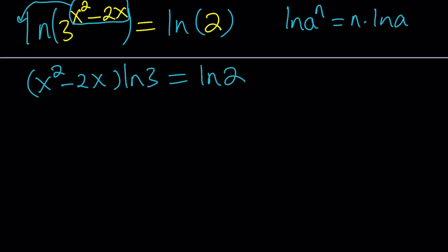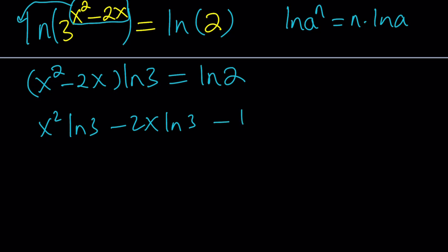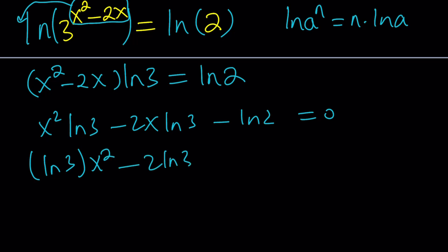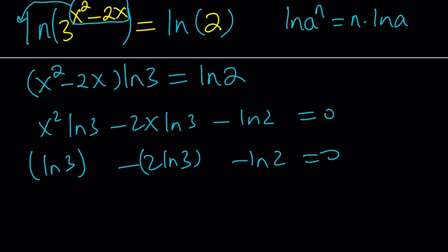Now, from here we want to solve for x. One way to look at it is we can distribute everything. You can put everything on the same side and turn this into a quadratic equation. You can write it like ln 3 multiplied by x squared minus 2 ln 3 multiplied by x minus ln 2 equals 0. If you pay attention to this equation, you're going to realize that it is actually quadratic in x, because this is x squared, this is x. The coefficient of x squared is a, this is b, and that's c.